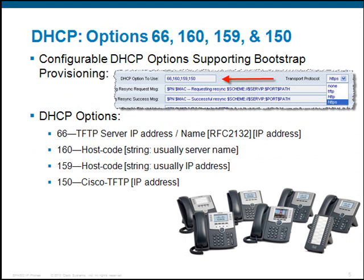This is an example of the phone's web user interface, and you'll see I'm listing the DHCP option to use. On this diagram, it's showing options 66, 160, 159, and 150, which will be used in that order.